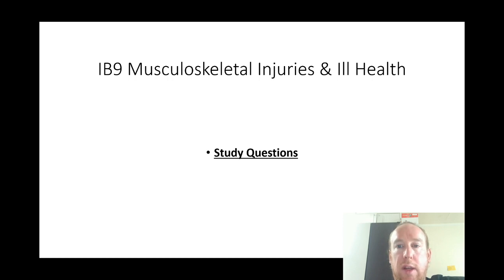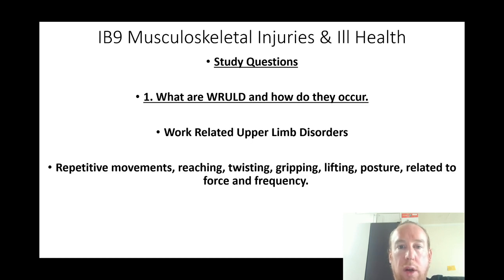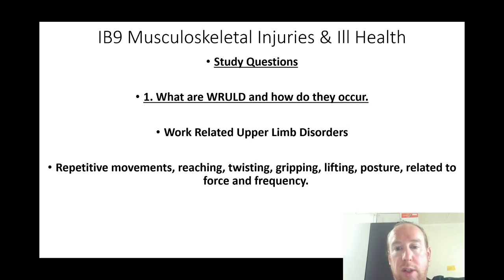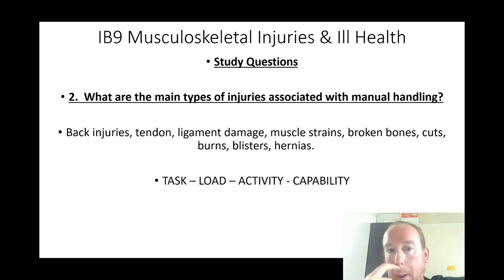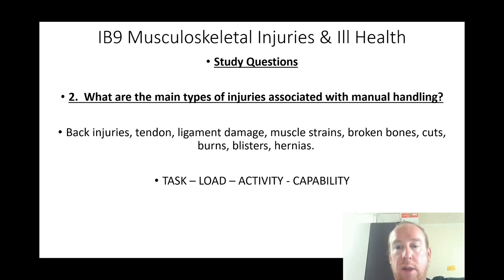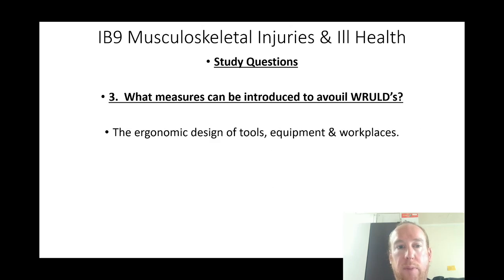Musculoskeletal injuries. What are WRULDs and how do they occur? Work-related upper limb disorders — caused by repetitive movements, reaching, twisting, gripping, lifting, posture related to force and frequency. What are the main types of injuries associated with manual handling? Back injuries, tendon and ligament damage, muscle strains, broken bones, cuts, burns, blisters, and hernias.